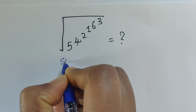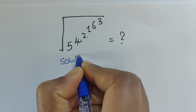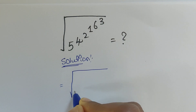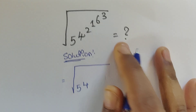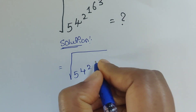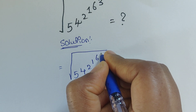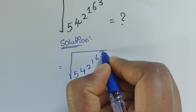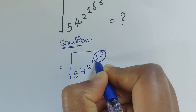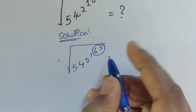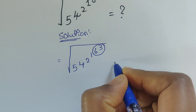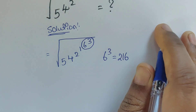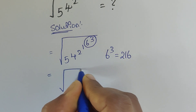So we are given the square root of 5 to the power of 4, times 4 to the power of 2, times 2 to the power of 1, times 1 to the power of 6, times 6 to the power of 3. First we calculate 6 to the power of 3, which equals 216.